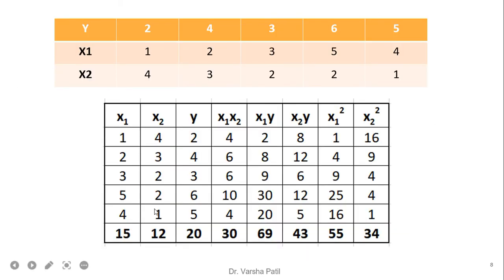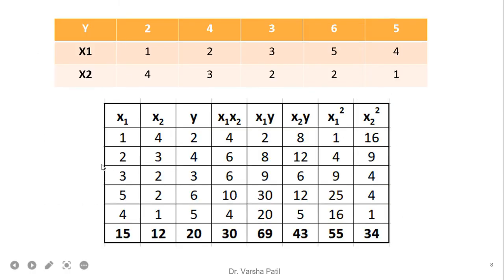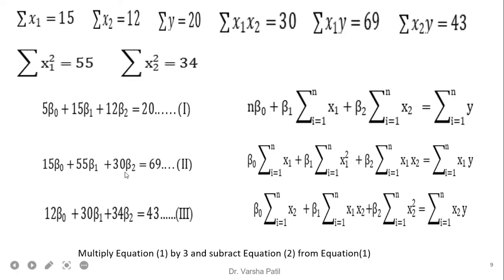From the table: summation of x1 = 15, summation of x2 = 12. In this way we write down all the summation values. We then put these values into the three normal equations to get a system of simultaneous equations with parameters beta 0, beta 1, and beta 2. It is straightforward to solve these simultaneous equations once you remember the three normal equations.